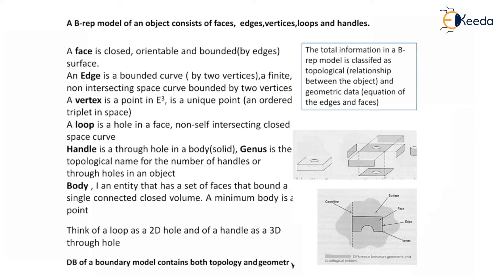The database of a boundary model contains both topology and geometry. As shown in the figure, there is a curve and line, then a surface, a face, edges, and vertices. The total information of the B-Rep model is classified as topological — the relationship between objects — and geometric data, which are the equations of the vertices, edges, and faces.